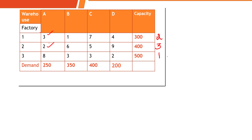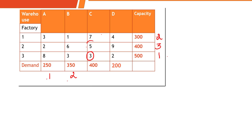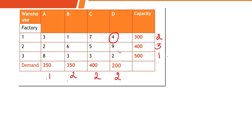Now identify the column penalties. Column 1 has values 3, 2, 8: two least are 2 and 3, so 3 minus 2 = 1. Column 2 has values 1, 6, 3: two least are 1 and 3, so 3 minus 1 = 2. Column 3: 7, 5, 3: two least are 3 and 5, so 5 minus 3 = 2. Column 4: 4, 9, 2: two least are 2 and 4, so 4 minus 2 = 2.